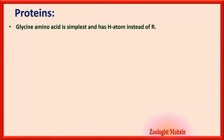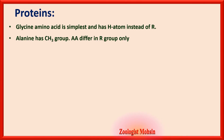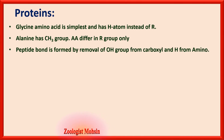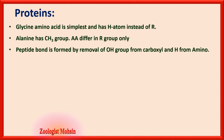Glycine is the simplest amino acid and has a hydrogen atom instead of an R group. Alanine is the second simplest and has a CH₃ group instead of R. All amino acids differ only in their R group, also called side chains. Peptide bond is formed by removal of an OH group from the carboxyl group and H from the amino group — this is a very important MCQ fact.